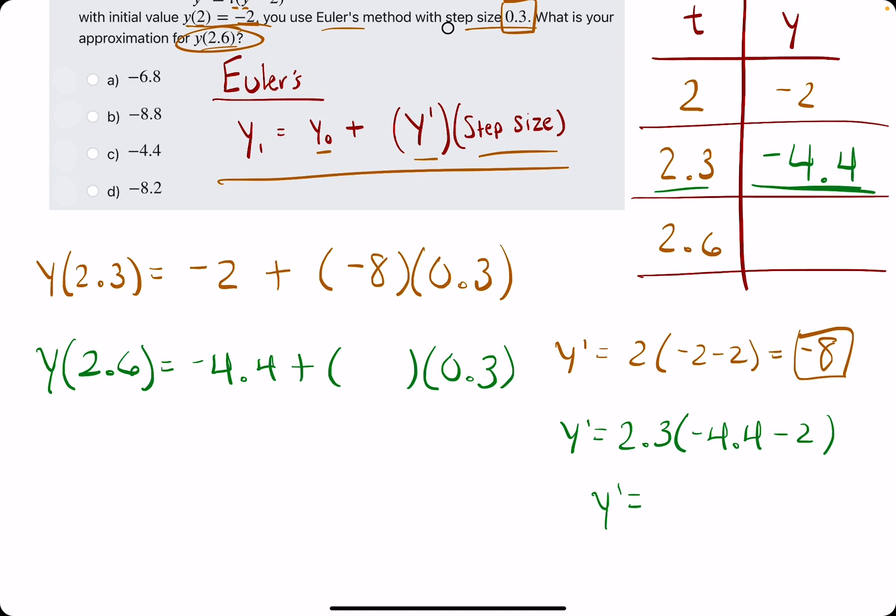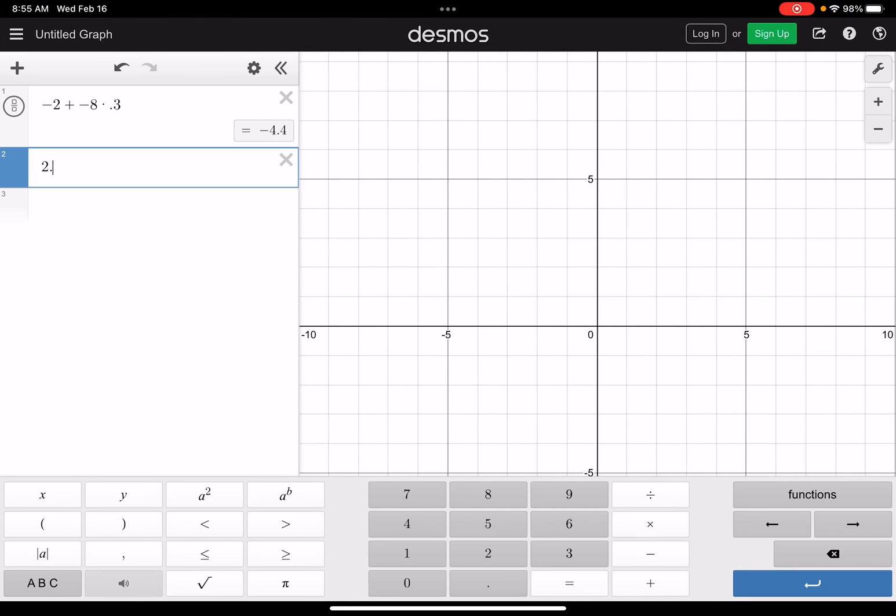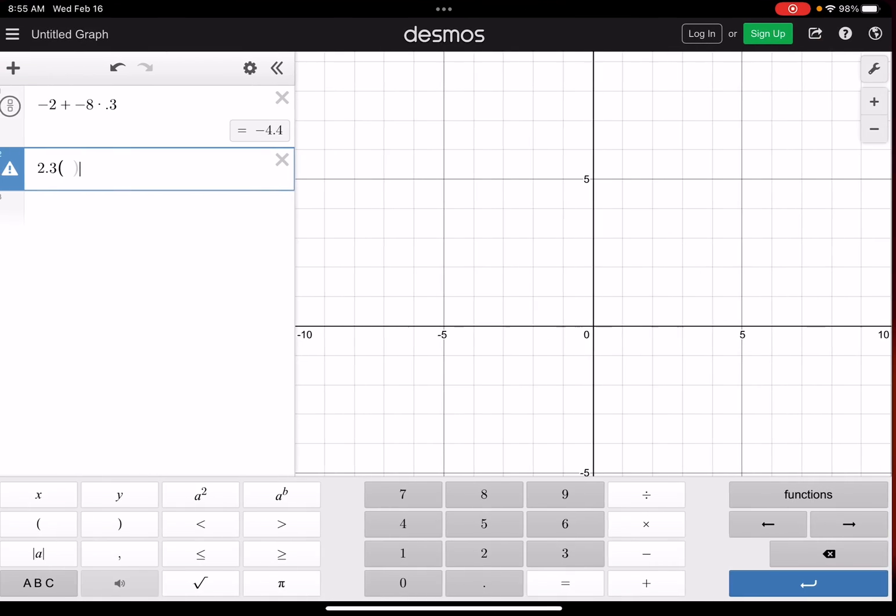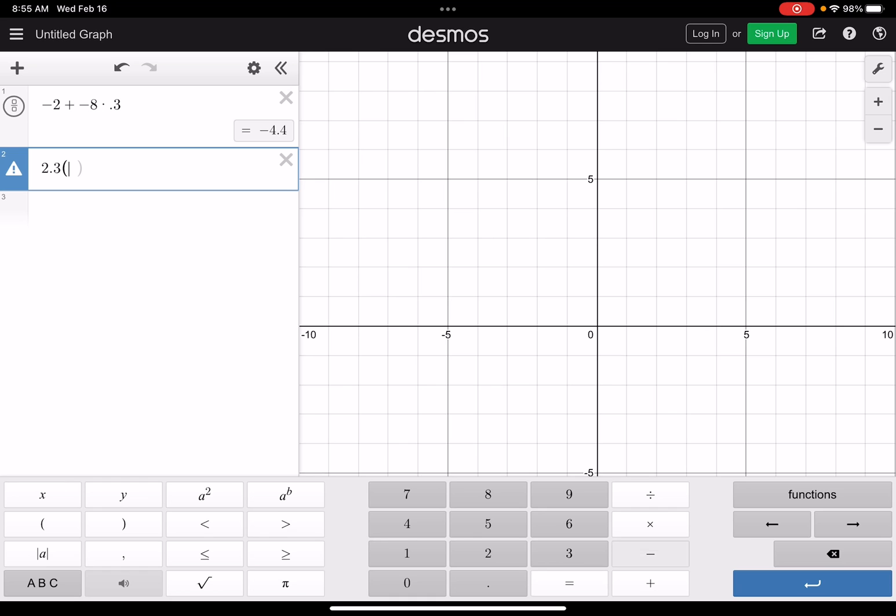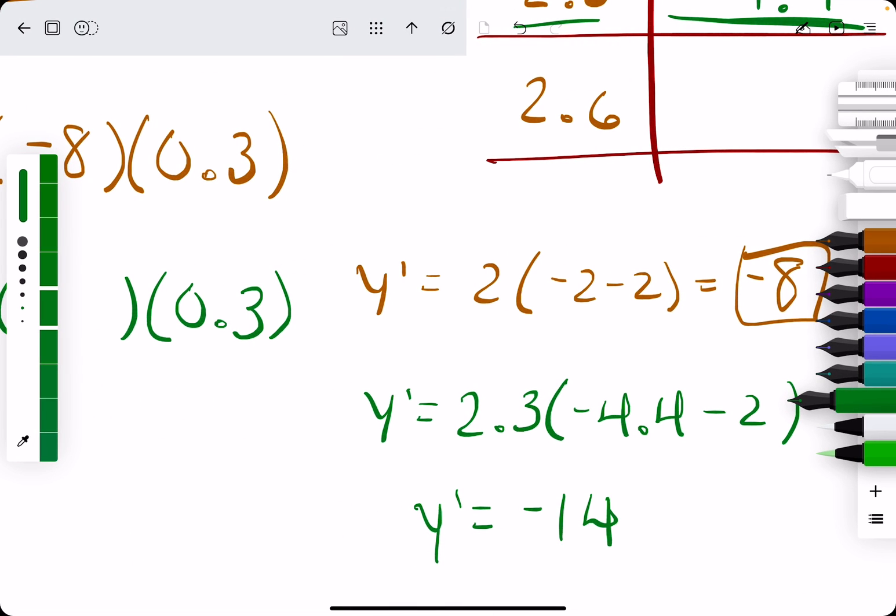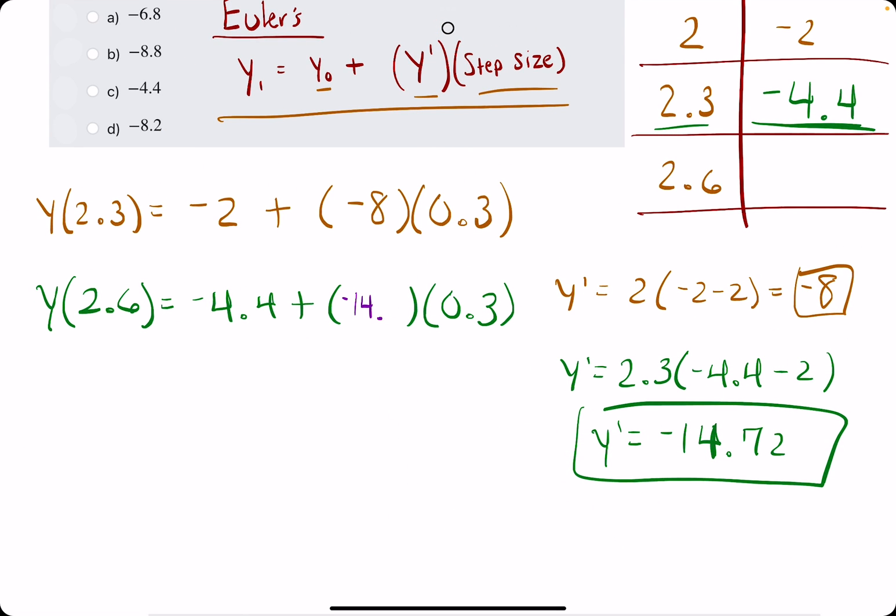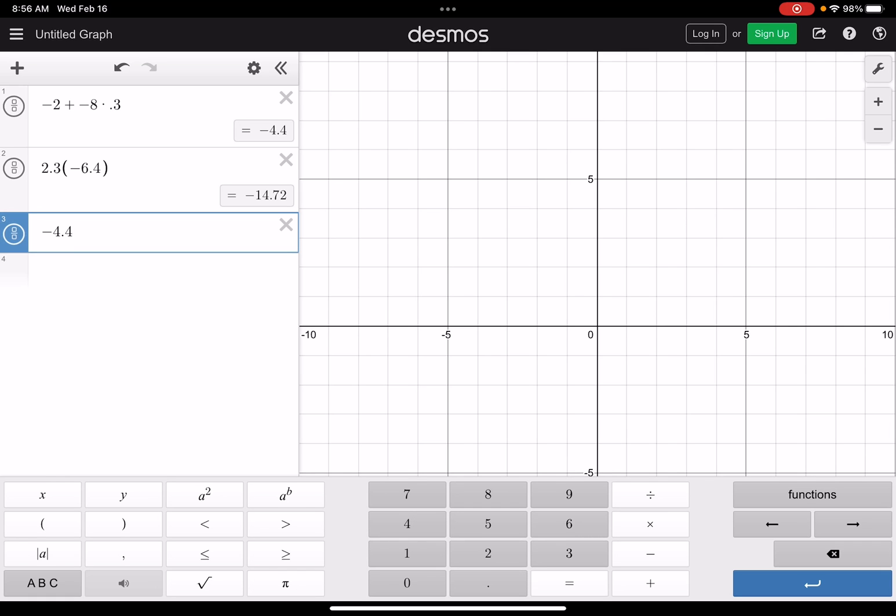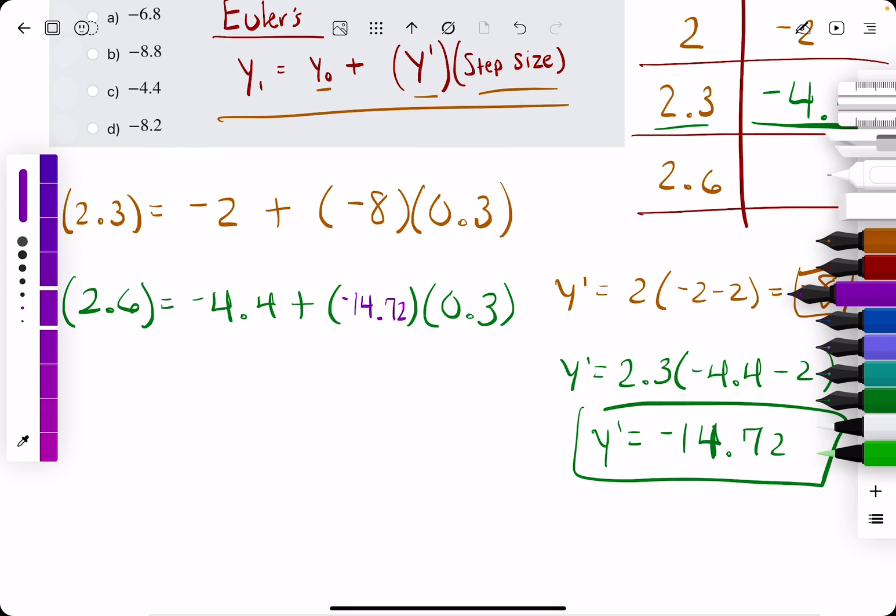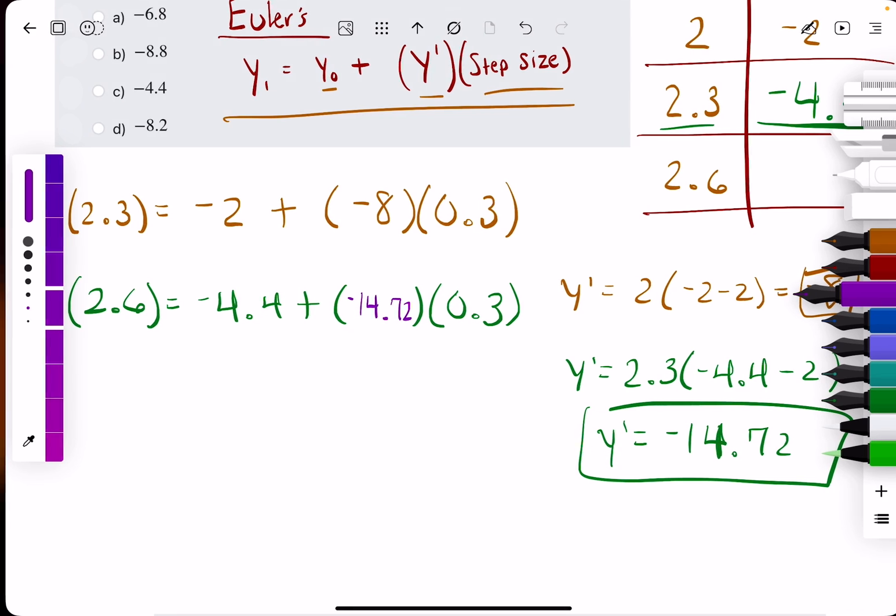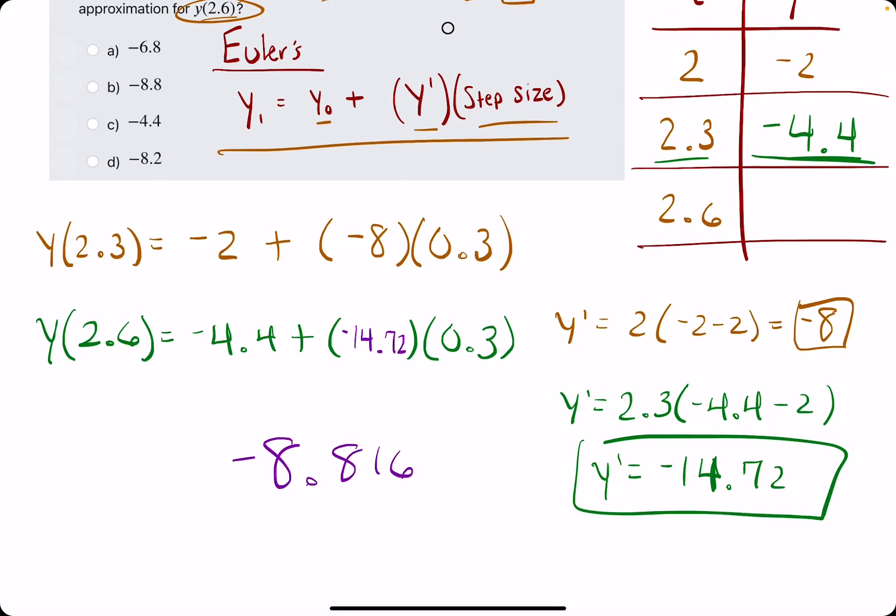So y prime will be 2.3 times negative 6.4, if we subtract that 2. We get negative 14.72. So keep in mind, these values will not always be nice, but as long as you're calculating them correctly, you should have no trouble. So negative 14.72, and let's go ahead and calculate that, negative 4.4 plus negative 14.72 times 0.3, and we get negative 8.8816 or negative 8.82, whatever you want to call it.